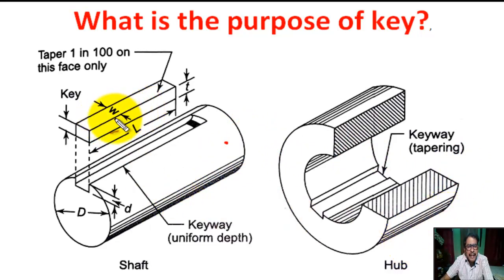Key is a temporary joint or connection like nut and bolts. It is an agent in transmission of motion and power.